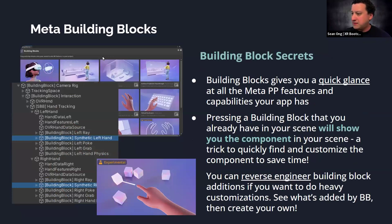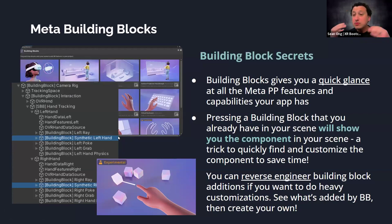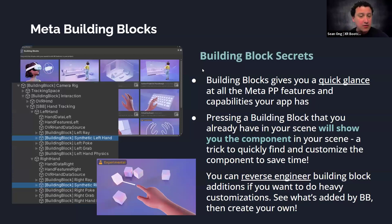Building Block secrets for time-saving: sometimes you'll add a building block and forget what changed in your scene. After adding a building block, if you press on it, you can actually see what it added to your scene — it'll highlight in blue what's been added. That gives you a quick at-a-glance view. When you open OVRManager or anything else, it'll show in the inspector panel what different building block components are in your project, and clicking them shows you where they are in your scene.